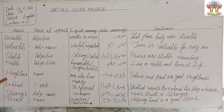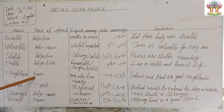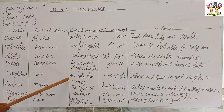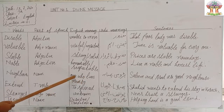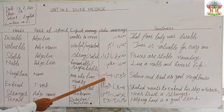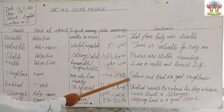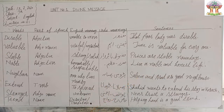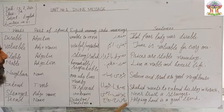Next word is 'neighbor.' Parts of speech: noun. English meaning: one who lives nearby. Urdu meanings: parosi, hamsaya. Sentence: 'Salim and Asal are good neighbors.'